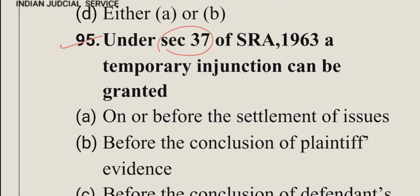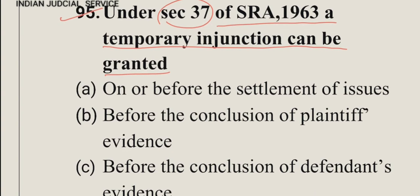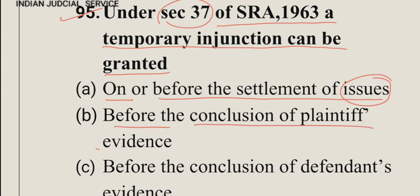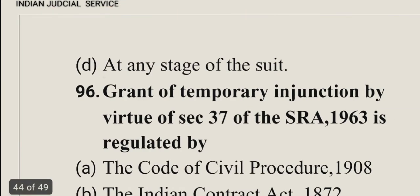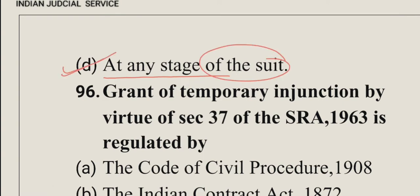Question number 95: Under section 37 of SRA 1963, a temporary injunction can be granted — option A: on or before the settlement of issues, option B: before the conclusion of plaintiff's evidence, option C: before the conclusion of defendant's evidence, option D: at any stage of the suit. The answer is option D, at any stage of the suit, as clearly provided in section 37 subsection 1.